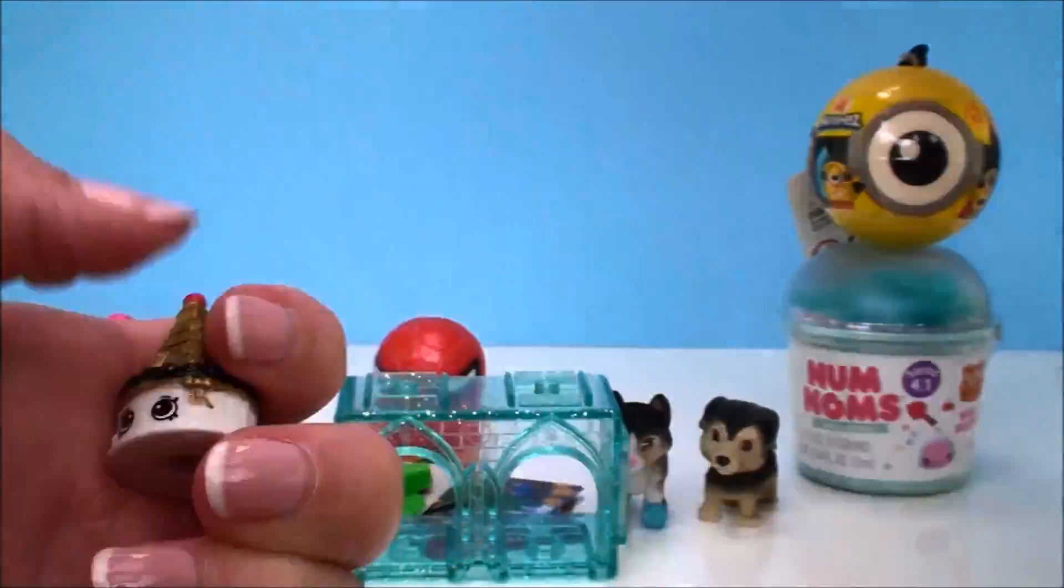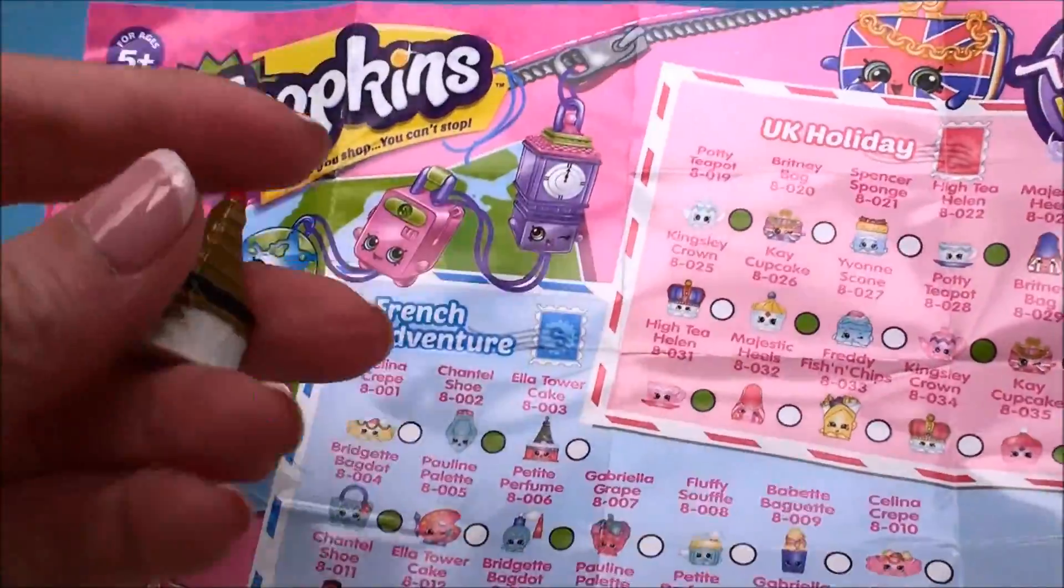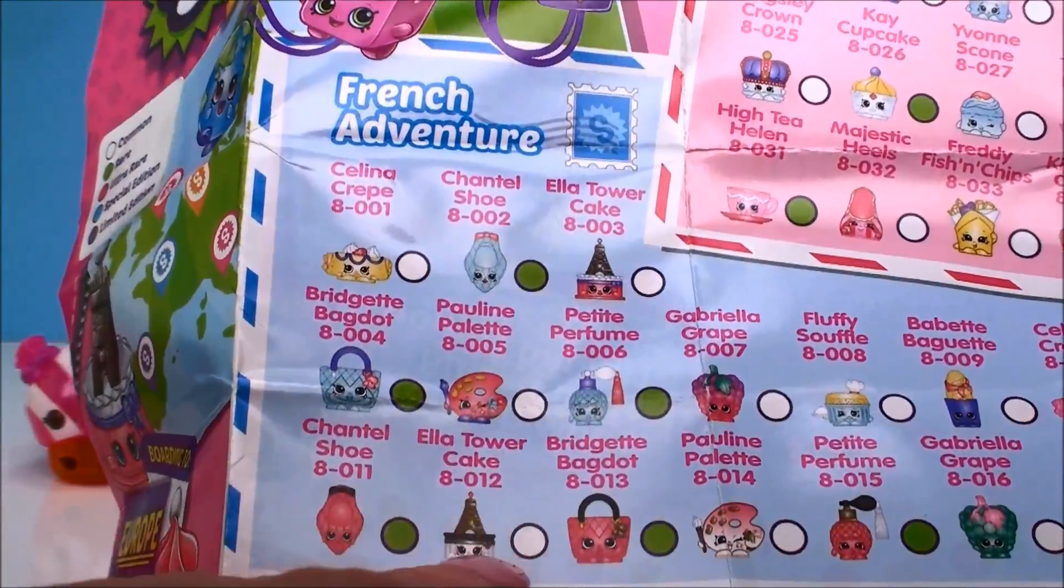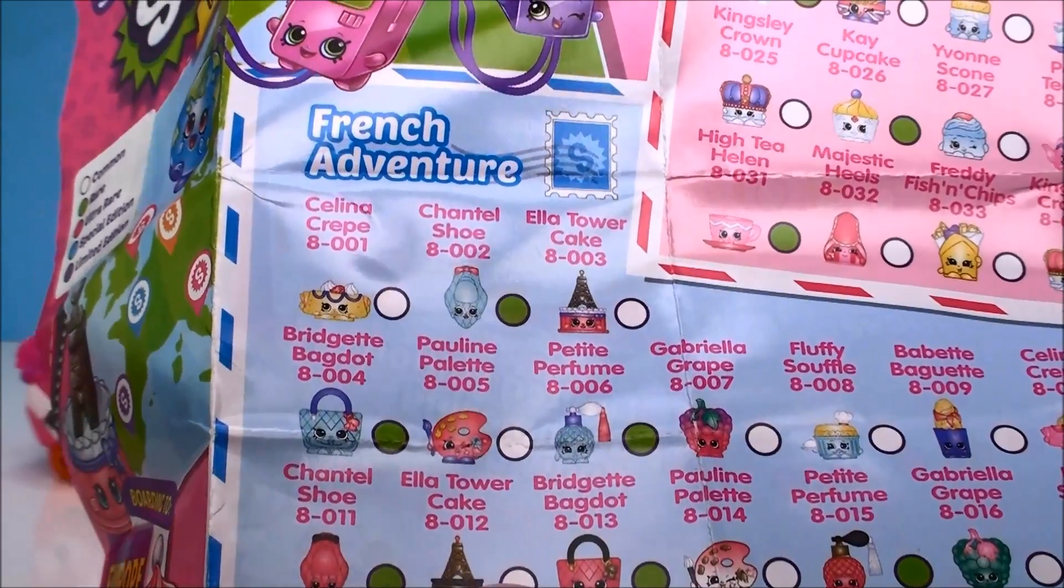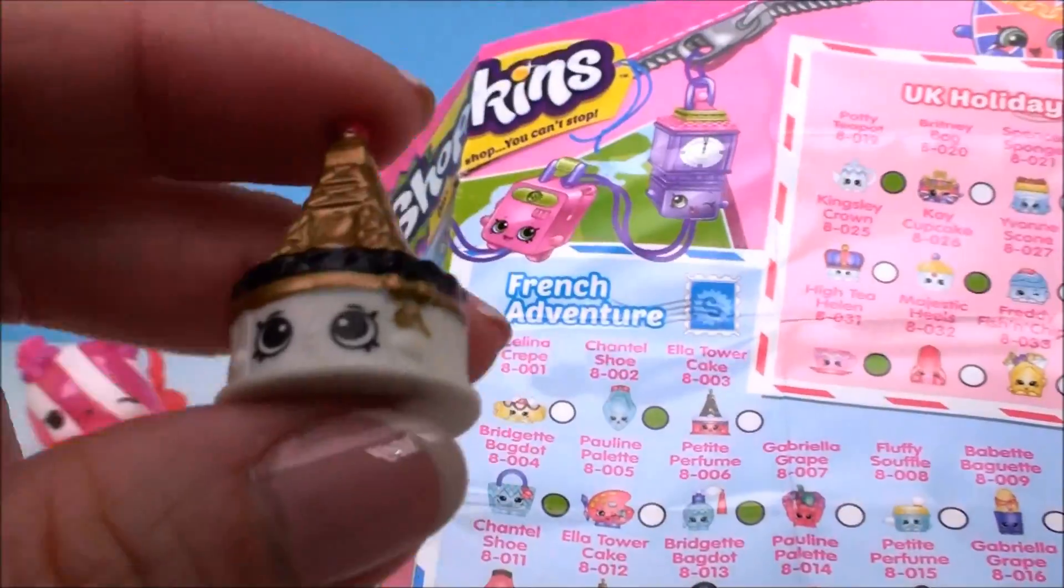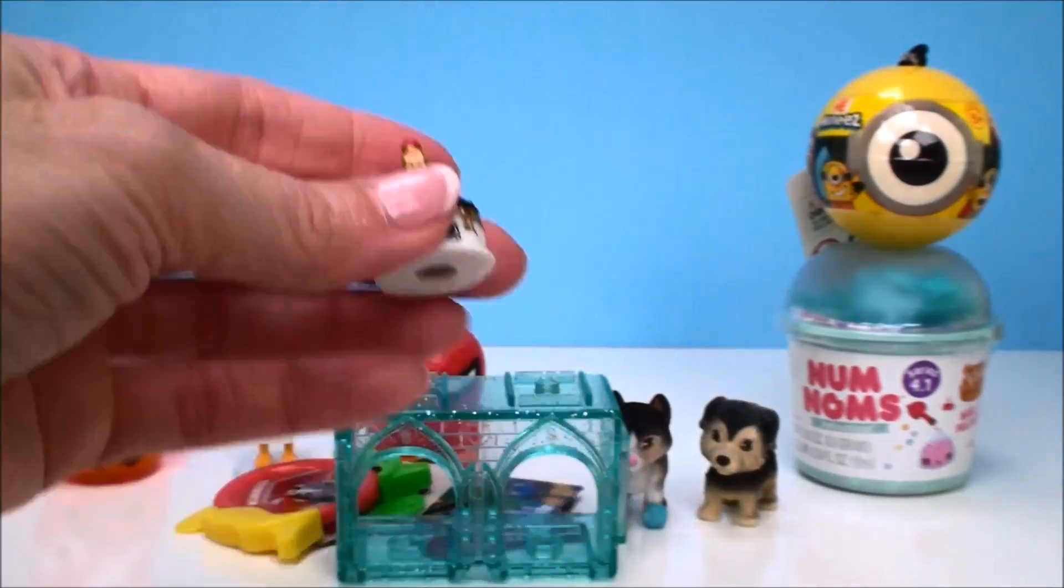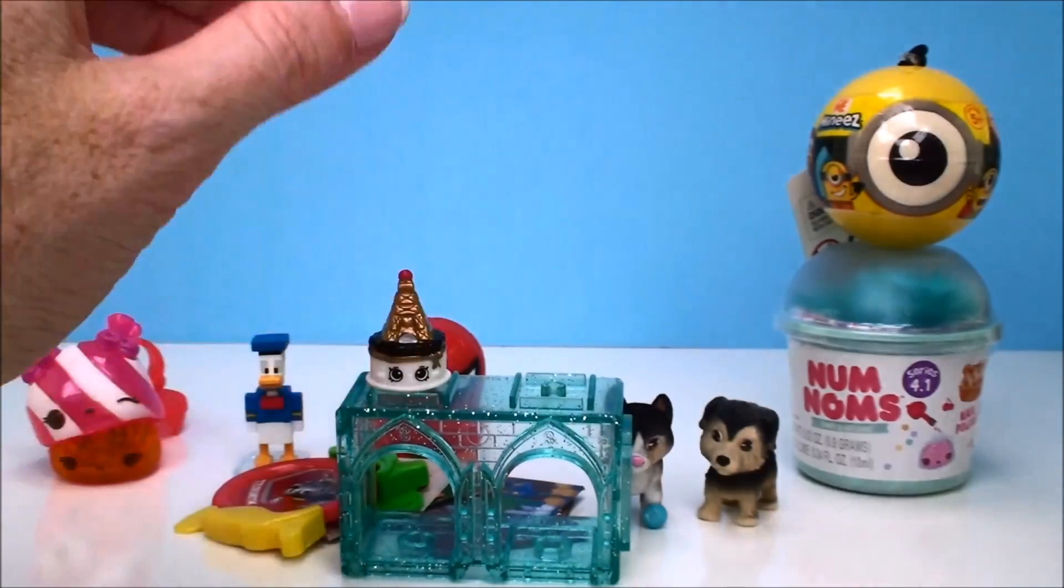Ooh, that one's cool. Look at that. The Eiffel Tower on a cake, right? Alright, so this one must be from the French Adventure. It's got to be. It's got the Eiffel Tower on it. Here it is. Ella Tower cake. Super cute. It is a white little circle. So that means that this is a common shopkin. Oops, so close. Sorry about that. So we'll put you up here on top of your little twin room here.